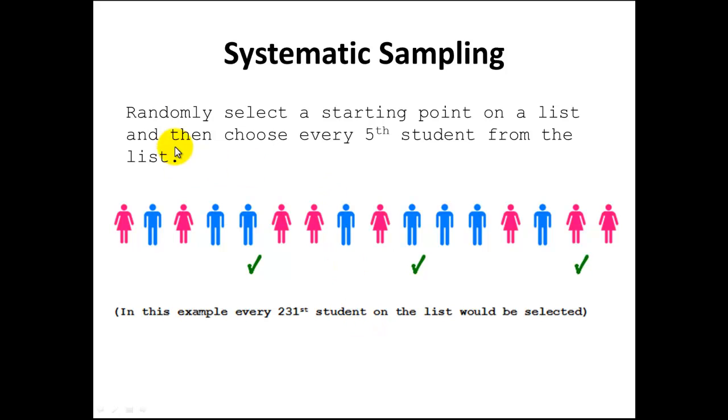An example here would be, we would randomly select a starting point on our list and then choose every fifth student from the list. As you can see here, every fifth person has a check mark under them indicating they would be chosen for the sample. In our case, we have 255,000 students. We would choose every 231st student from a grand list of the 255,000 students, and every 231st student on the list would then be put into our sample.